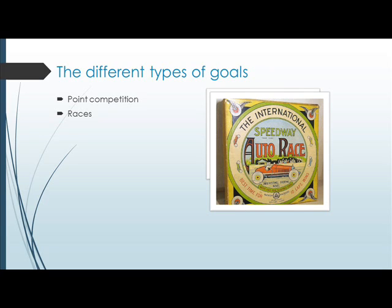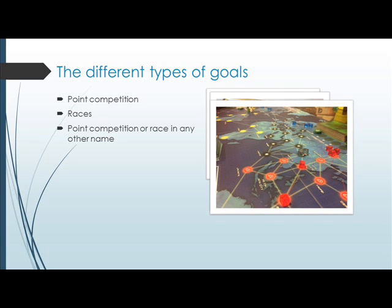Races: here the participants are trying to reach a certain point first — a physical position, a call number, or another objective. Cooperative games are often a race against the game mechanics. Most games can actually be broken down in terms of point competition or race, even if the narration presents them differently. For example, in Pandemic, the players need to find four different cures to diseases, but it can just be seen as scoring four different points.